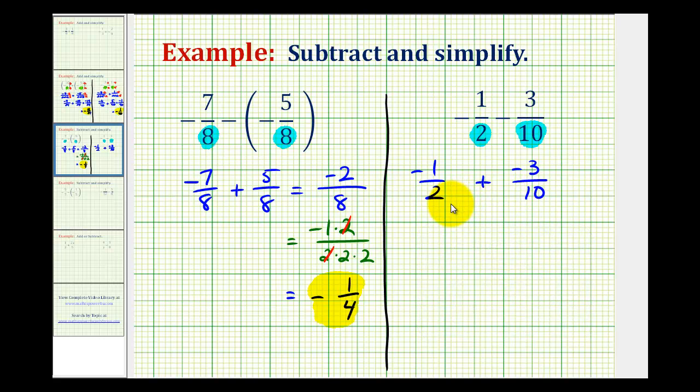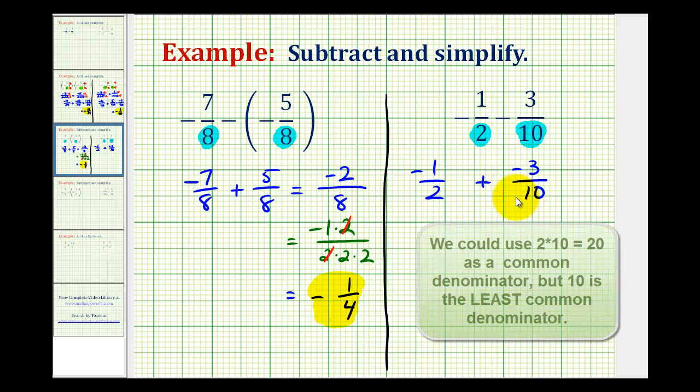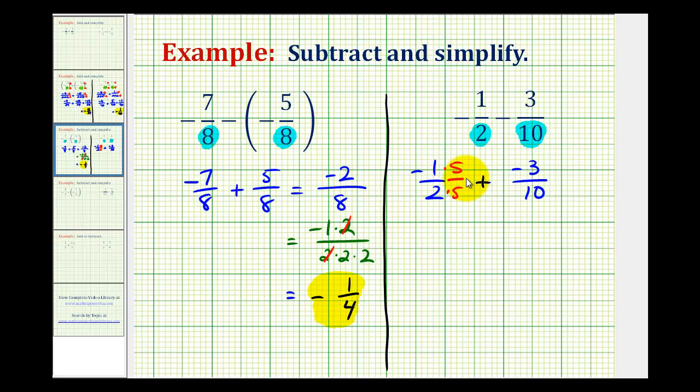And now let's work on determining the least common denominator. We want the smallest number that is a multiple of both 2 and 10, or the smallest number that is divisible by both 2 and 10, which in this case would be 10. So if we multiply negative 1 half by 5 in the denominator and 5 in the numerator, that's like multiplying by 1. But notice how now we do have a common denominator of 10.